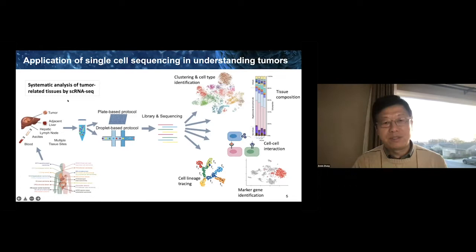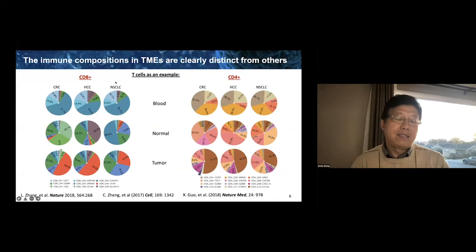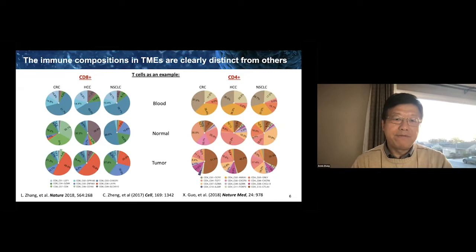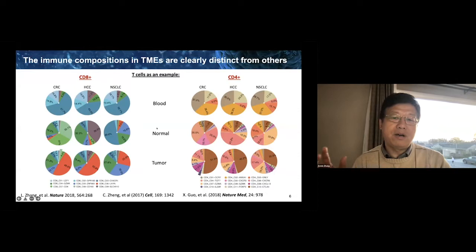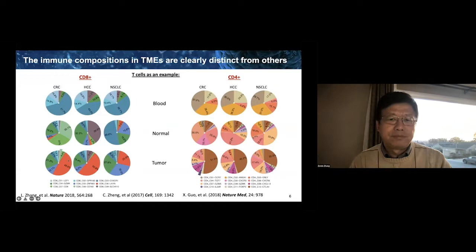We started by studying T-cell properties, then gradually broadened to include all tumor immune types. What we found early on is that different cancer types — colon cancer, liver cancer, and lung cancer — if you simply look at the blood samples, the differences between them are very small. But if you look at normal tissue, the T-cell composition is actually very different, indicating that tissues themselves play a very important role shaping infiltrating immune cells. In tumors, on top of those differences, there are more dramatic differences where you start to see many tumor-specific cell types. The TME seems to be influenced by the combination of tissue location and cancer cells.